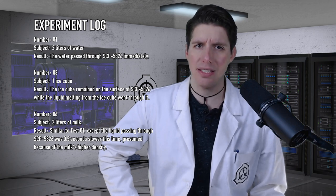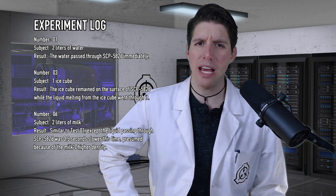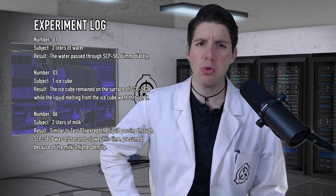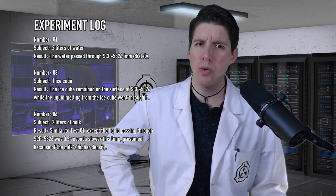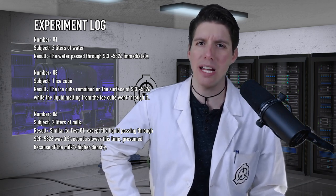Number 6. Subject: 2 liters of milk. Result: Similar to test 1, except the liquid passing through SCP-5826 was 0.5 seconds slower this time, presumed because of the milk's higher density.